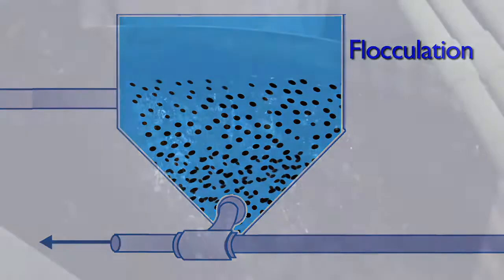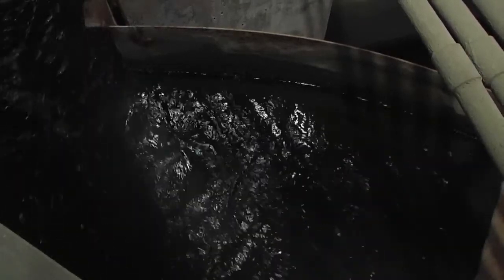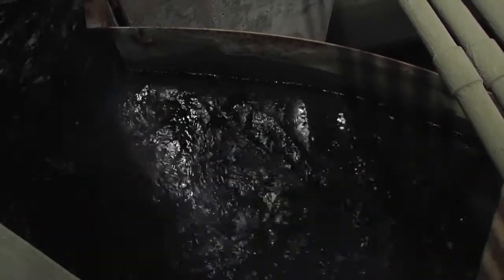In the flocculation process, water flows into a tank or tanks with paddles that provide a slow mixing of the coagulant chemicals. This brings small particles together to form larger particles or clumps.